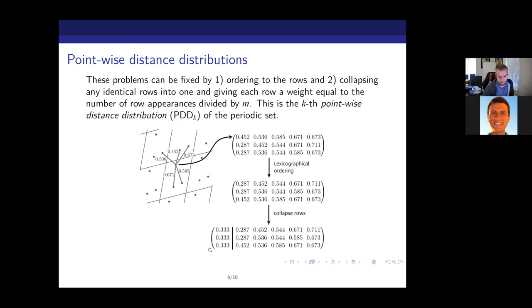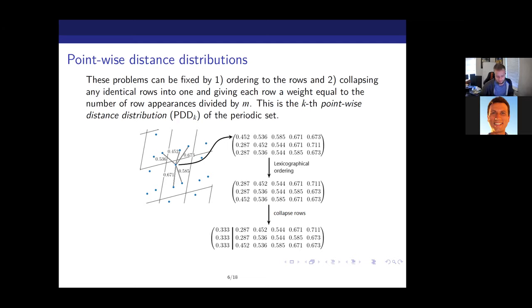In this example I took the matrix from before, ordered it lexicographically so the entry with 0.287 and then 0.452 appears first, and since there are no identical rows we don't collapse any rows — we just keep them as they are and give them each a weight of one third. That is quite simply how we construct the pointwise distance distribution for a given k.